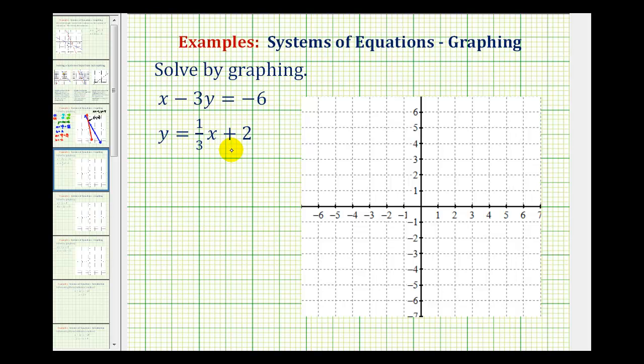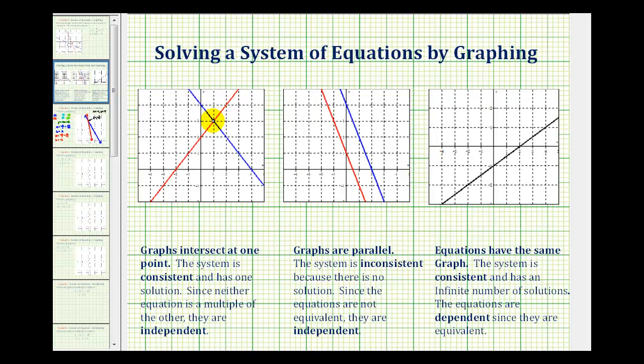Let's quickly review what can happen when we graph two lines on the same coordinate plane. Well, if two lines have different slopes, they will intersect, and the coordinates of the point of intersection will represent the solution.